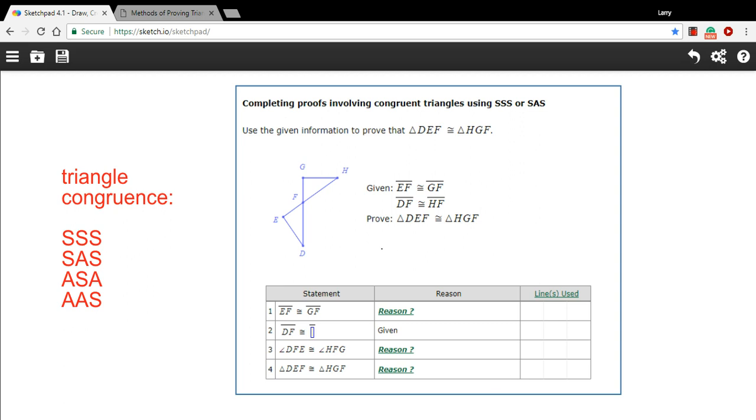This is a proof to try to prove that two triangles are congruent. So we need to be thinking about our triangle congruence properties or triangle congruence theorems. There are four that we're concerned about here.